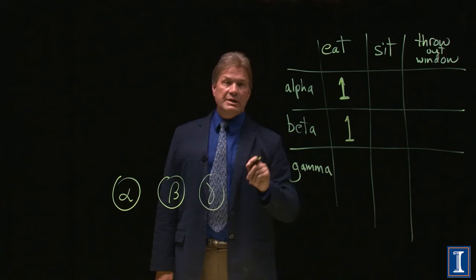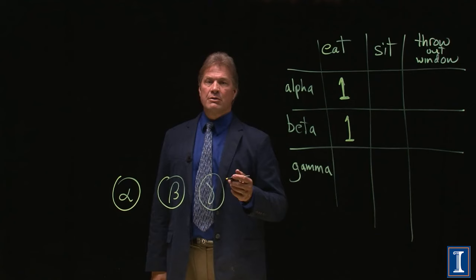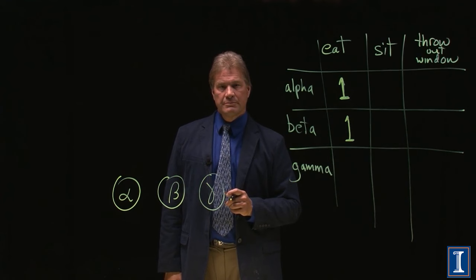If I eat the beta emitter, same thing. A thin piece of aluminum foil will stop betas. Four inches thick of person will stop betas as well. So if you eat the beta emitter, all of the beta energy will end up going into your tissue.